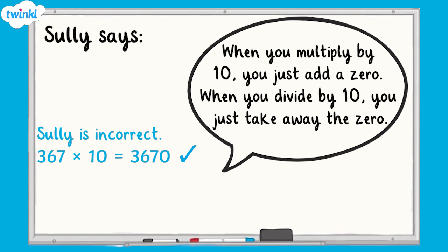For example, 367 multiplied by 10 equals 3670. However, if we apply this to a decimal number, the pattern doesn't work. For example, 54.32 multiplied by 10 does not equal 54.320.